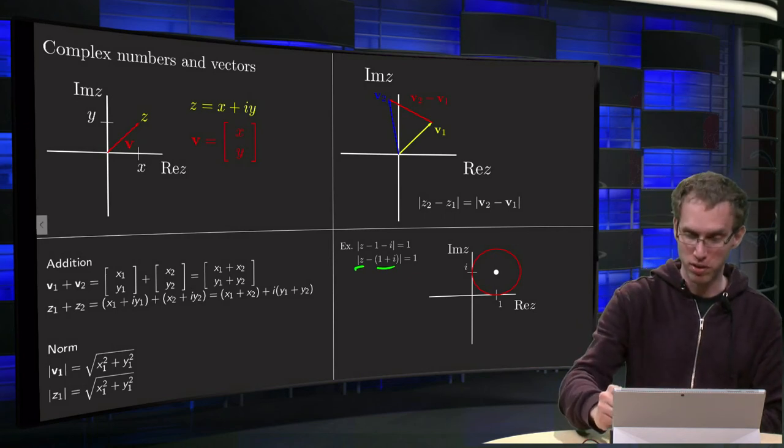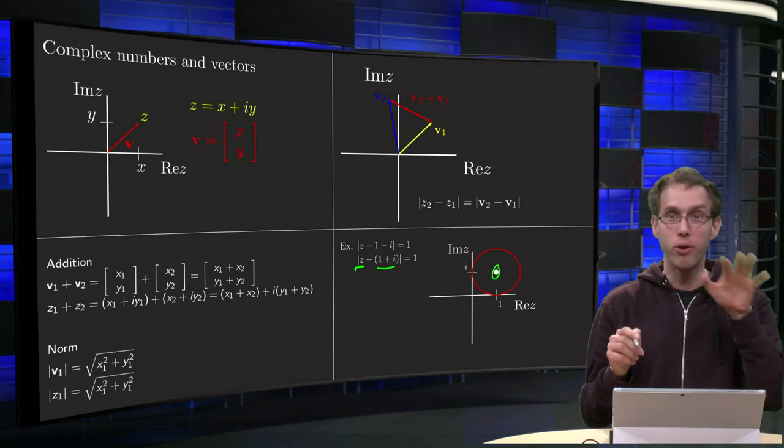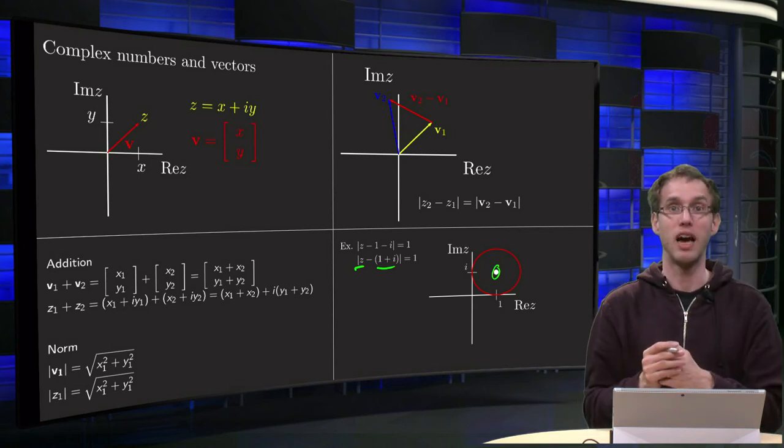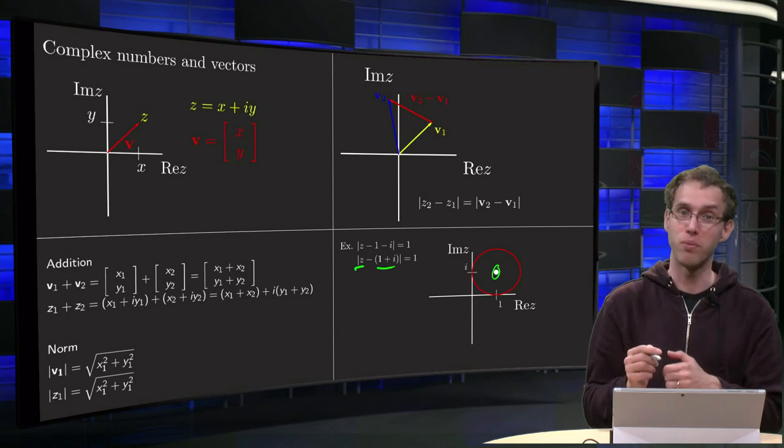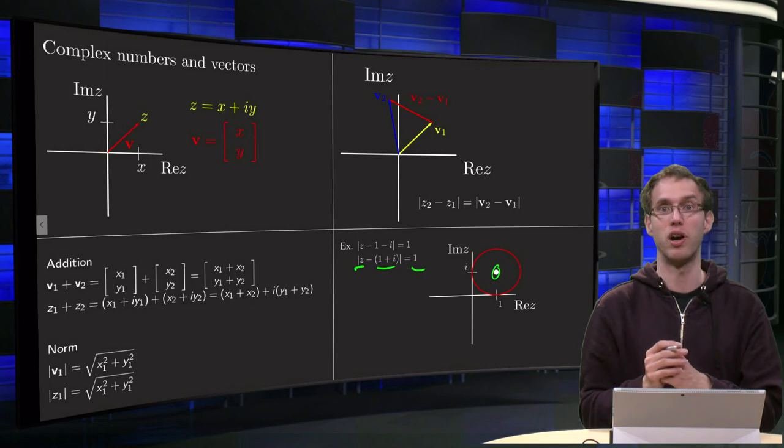That means that the distance between your fixed point 1 plus i and all the other points is the same, so that means that all the other points have to lie on a circle with center 1 plus i, and with radius 1, so with r equals 1.